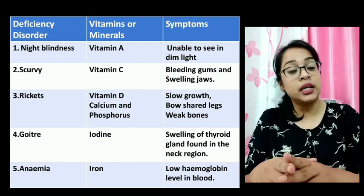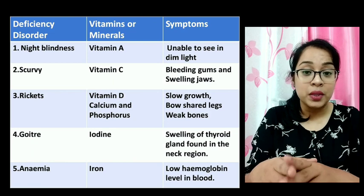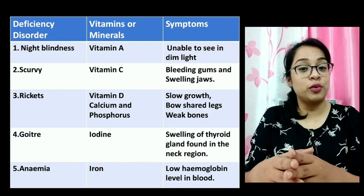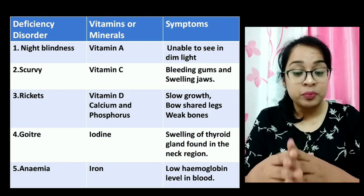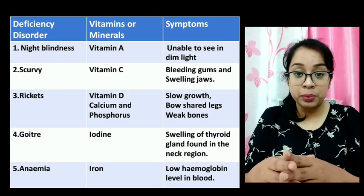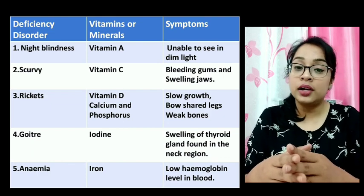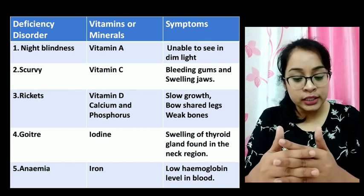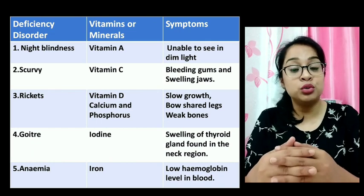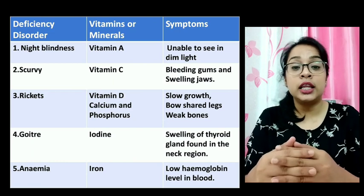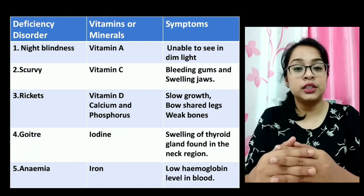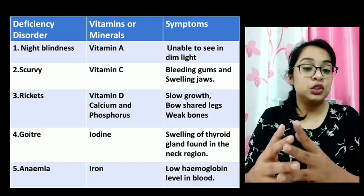Anemia is a disease caused by deficiency of the mineral iron. Iron is an important part of hemoglobin, the red pigment of the blood. If there is a deficiency in iron intake then the level of hemoglobin will decrease. You should eat foods such as spinach, apple, guava, and jaggery to prevent anemia.